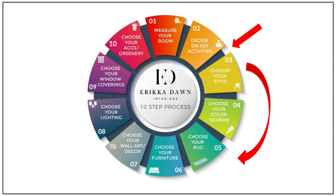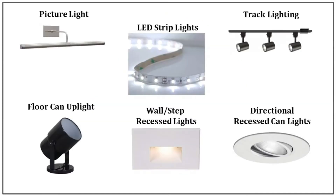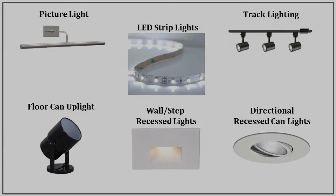A final important note: in step 8, choose your lighting. Unless your focal point is a light fixture, I would consider using some form of accent lighting to highlight your focal point — such as a picture light for artwork, directional recessed can lights to highlight wall decor, or LED strip lights for a beautiful bookcase.